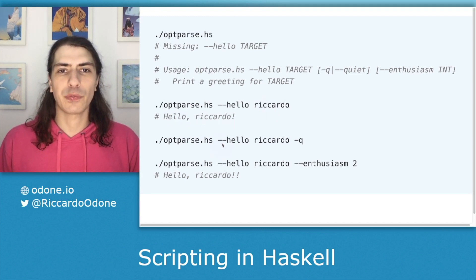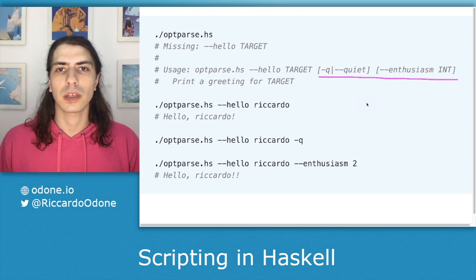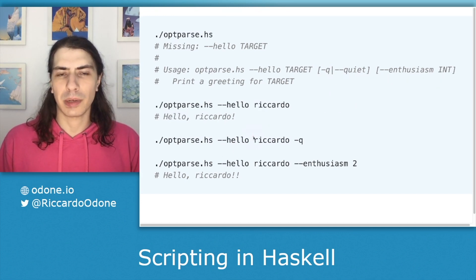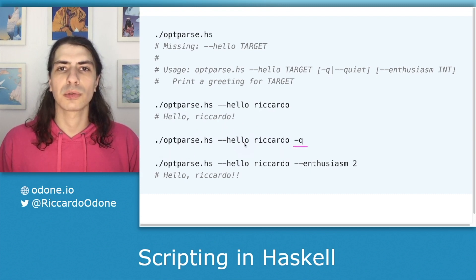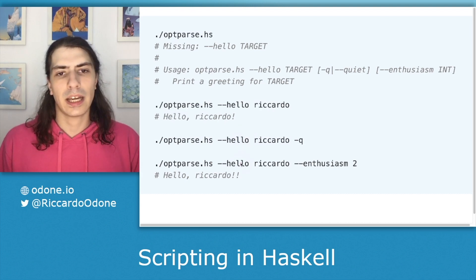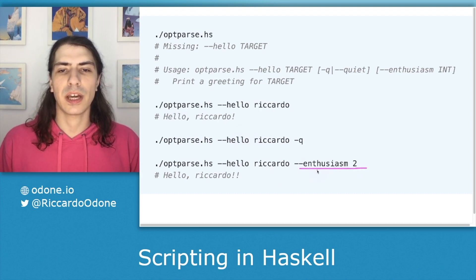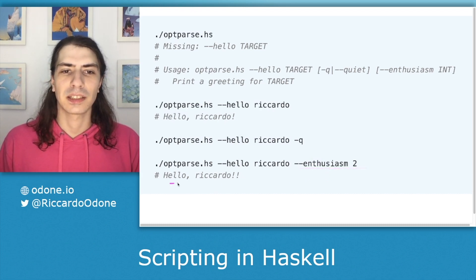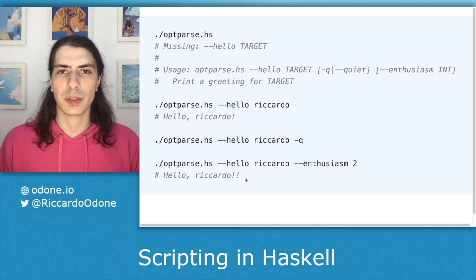Now we noticed before that there were a couple of optional arguments. So let's try them out and see what happens. In the first case, when we pass -q, nothing is printed out. And in the second case, we can see that we can pass the enthusiasm as two, and here we get the string as before with two exclamation marks.